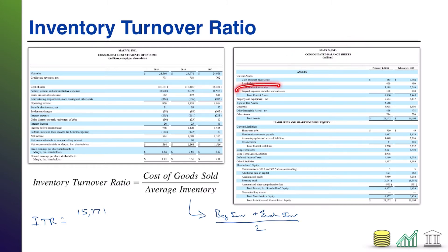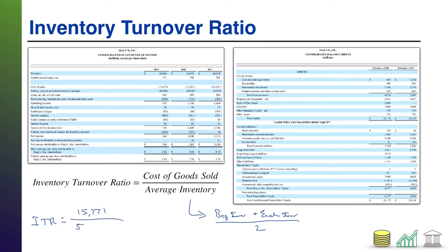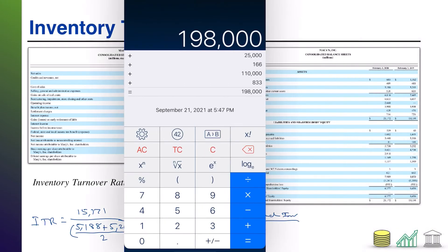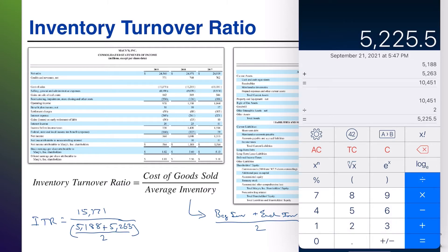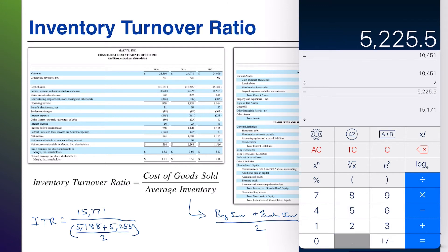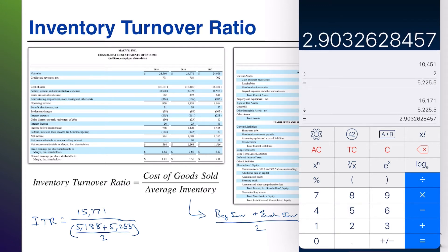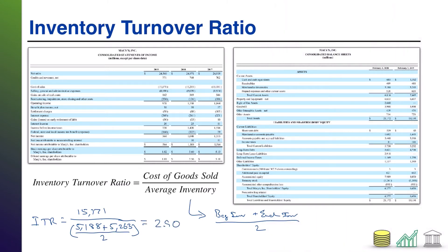If I look at Macy's balance sheet, I find inventory — they call it merchandise inventory. I have this year's balance and last year's balance. So I'm going to take this year's balance, 5,188, plus last year's balance, 5,263, and divide those balances by 2 — that's my average inventory denominator. So: 5,188 plus 5,263 equals divided by 2, giving average inventory of 5,225.5. Then I take my top, 15,171, divide by 5,225.5, and I'm getting an inventory turnover of 2.9.